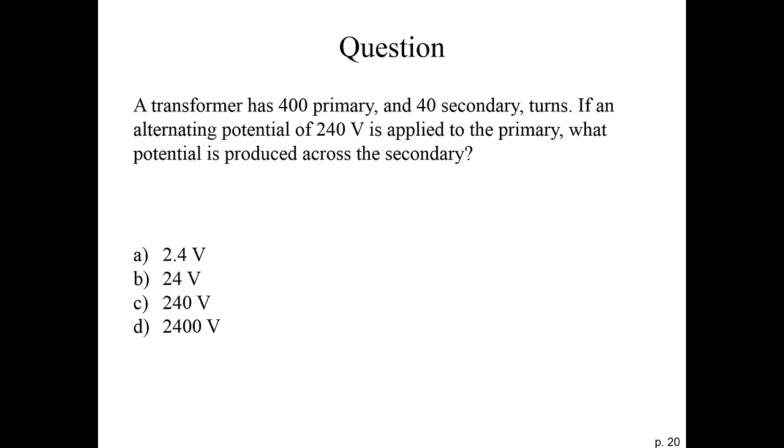Okay, so let's do our example. We have a transformer that has 400 primary and 40 secondary turns. If an alternating potential of 240 volts is applied to the primary, what potential is produced across the secondary coil?